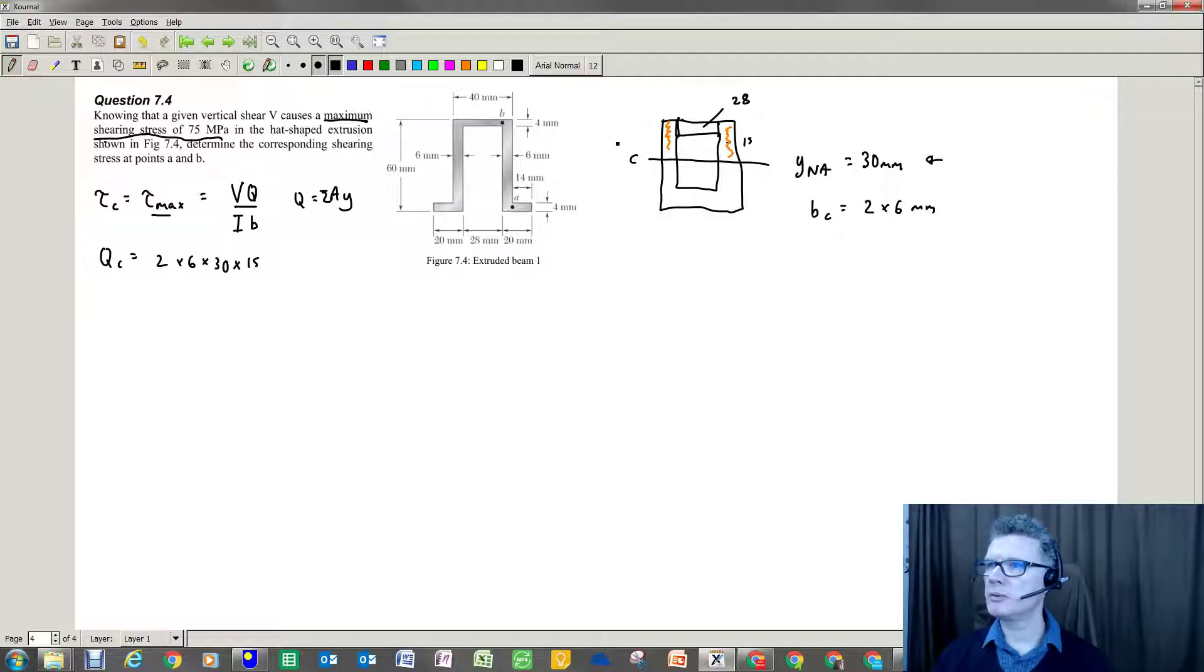And then the top section is a width of what? 40 take away 12. So that is 28 times 4 times 28.